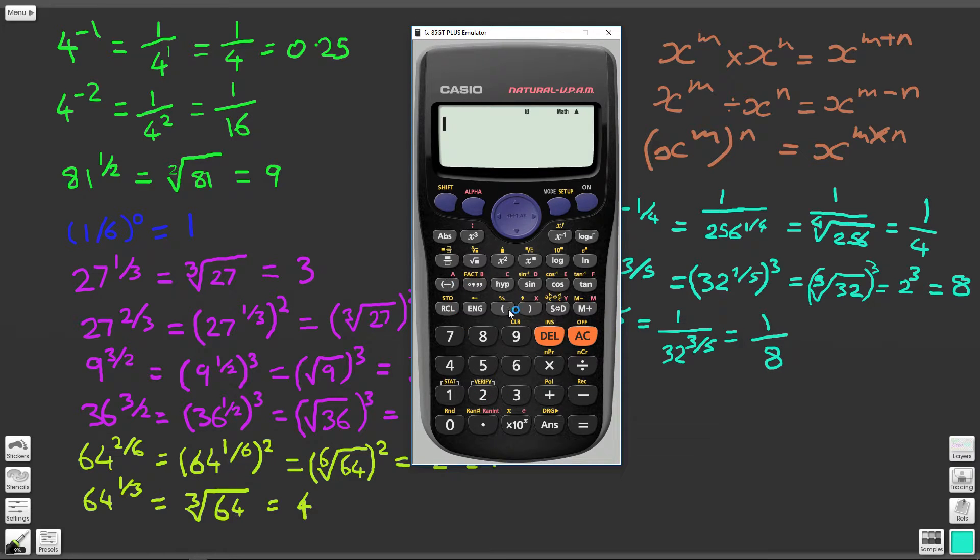So now we'll say what is 1 sixth to the power of 0. 1 sixth to the power of 0, and we get 1. 1 sixth to the power of 0 is equal to 1, which is what we're trying to prove over here.